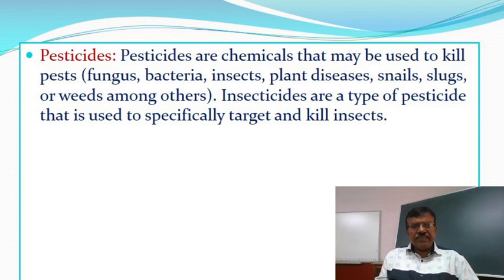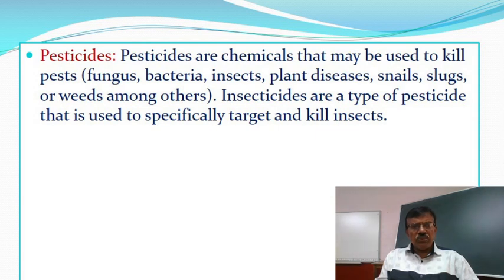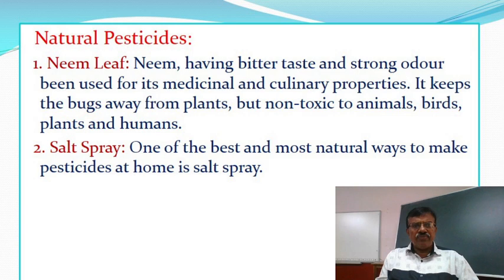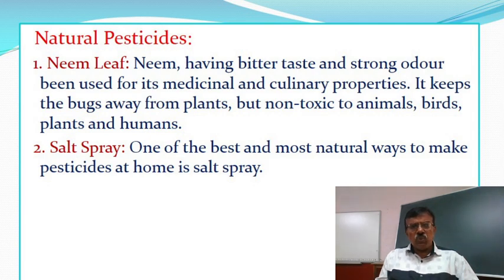Pesticides are chemicals that may be used to kill pests such as fungus, bacteria, insects, plant diseases, snails, slugs, weeds, among others. Insecticides are a type of pesticide used to specifically target and kill insects. Natural pesticides include Neem leaf — neem has a bitter taste and strong odor and has been used for its medicinal and culinary properties. It keeps bugs away from plants but is non-toxic to animals, birds, plants and humans. Salt spray is one of the best and most natural ways to make pesticides at home.